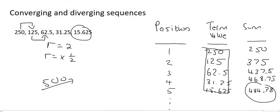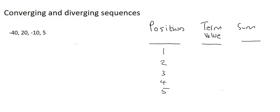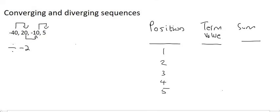Let's look at another sequence and then draw a conclusion about when sequences converge and diverge. This sequence is also geometric — to get from one term to the next you divide by negative 2. Dividing 20 by negative 2 switches it to negative; dividing negative 10 by negative 2 switches it back to positive. The first term value is negative 40, so the sum is negative 40. The next term is 20, so the sum is negative 20. Then negative 10 gives a sum of negative 30. Then 5 gives a sum of negative 25.